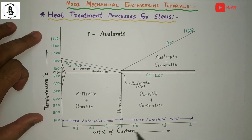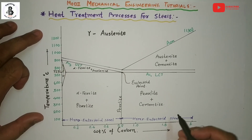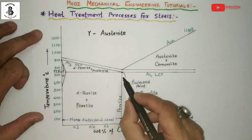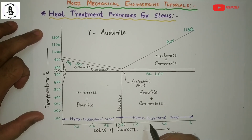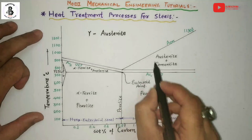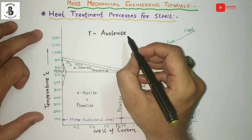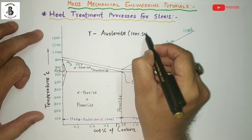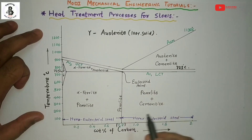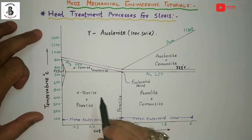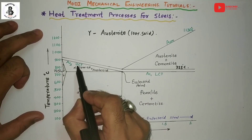You can say that it will be the hypo-eutectoid steel, eutectoid steel, and hyper-eutectoid steel. If you want to learn in detail about hypo-eutectoid steel, eutectoid steel — also known as 0.8% carbon steel — or hyper-eutectoid steel, you will find a link in my description box. Above 723°C it will be the formation of gamma austenite, or 100% solid phase of the steel just above 723°C. As per the iron-carbon diagram, this line from 910°C is known as the AC3 temperature line, or the upper critical temperature line.